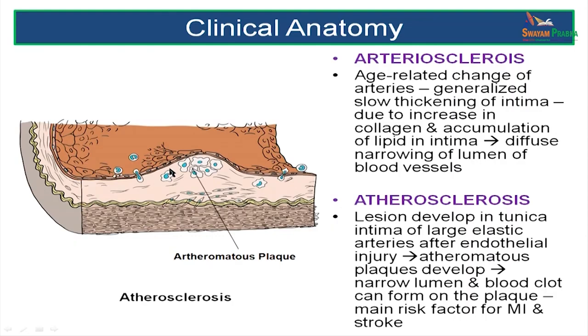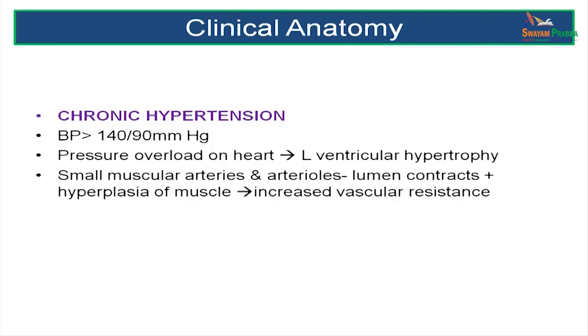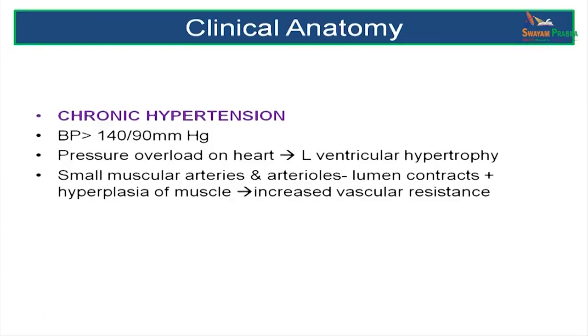Another type of arterial disease is arteriosclerosis, where there is a generalized thickening of the arterial wall that narrows the lumen and reduces blood flow. Hypertension is an increase in systolic pressure above 140 and diastolic pressure above 90 millimeters of mercury. There is a pressure overload on the heart leading to more workload for the left ventricle which hypertrophies. The small muscular arteries and arterioles have a contracted lumen due to hyperplasia of the muscle, causing increased vascular resistance.